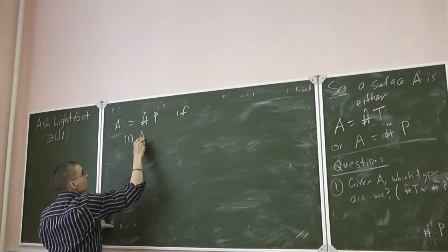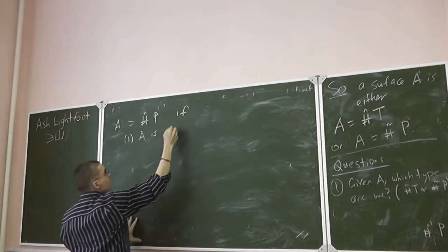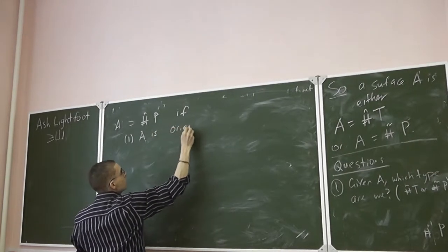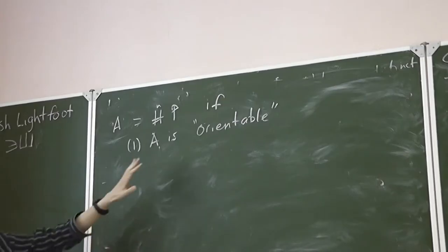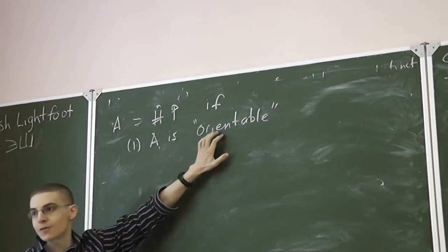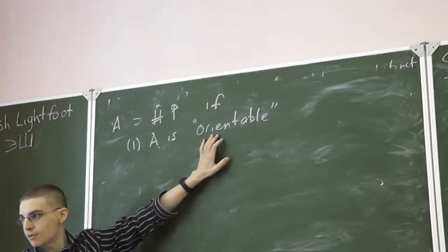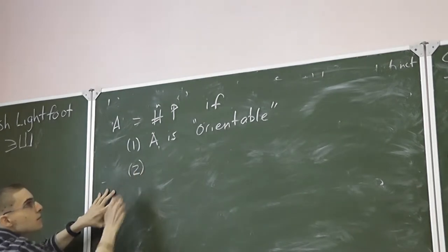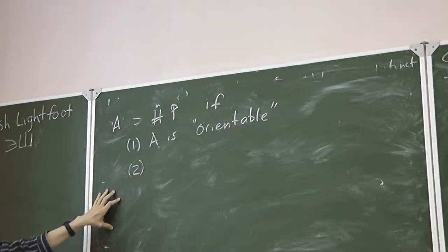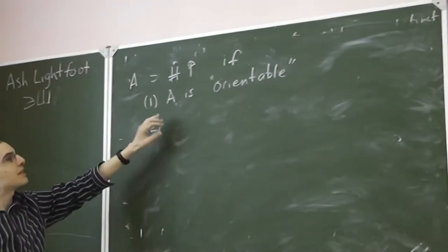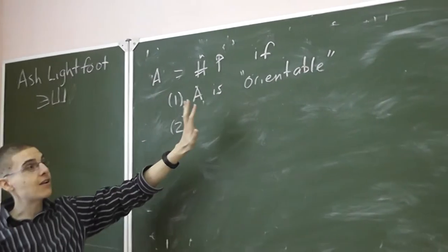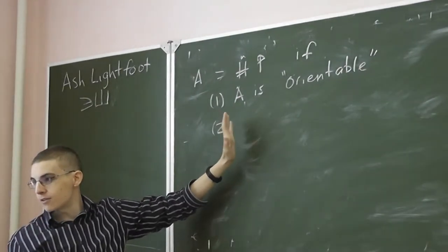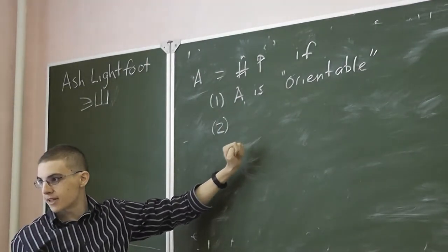If A is orientable — let's define what this means by giving some equivalent criteria. So what does it mean to be orientable? It means that our right stays on our right wherever we go. But maybe we can try and give a more mathematical description of that.